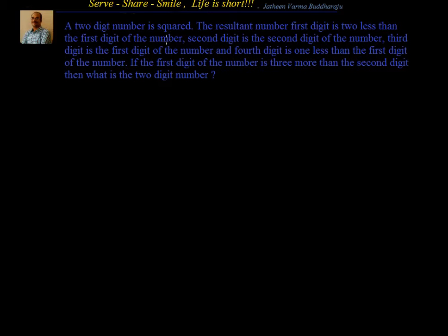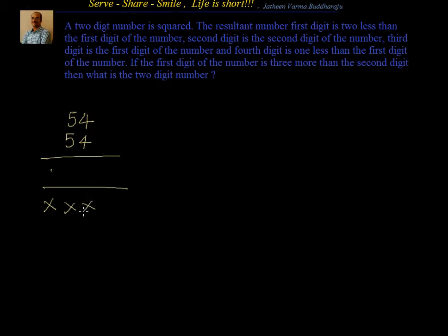A two-digit number is squared. So let us say we have taken 54 and we multiplied that with 54 again. The resultant number's first digit — when you multiply them, there will be four digits. The resultant number's first digit is two less than the first digit of the number. The first digit of the number is five, so the resultant first digit should be something like four here.